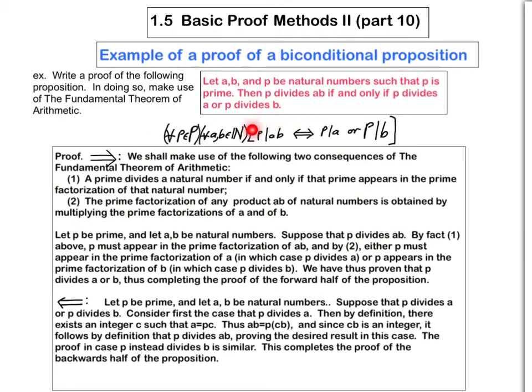Using only the fact that P divides AB and the fundamental theorem, by fact one P must appear in the prime factorization of AB. By fact two, either P must appear in the prime factorization of A — in which case P divides A — or P appears in the prime factorization of B, in which case P divides B. Thus we have proven that P divides A or B, completing the proof of the forward half of the proposition.